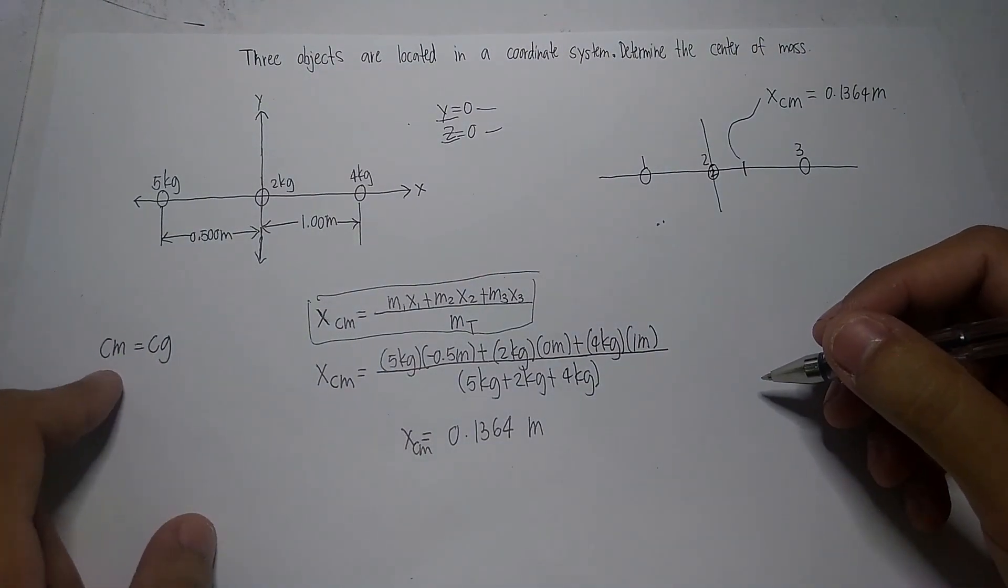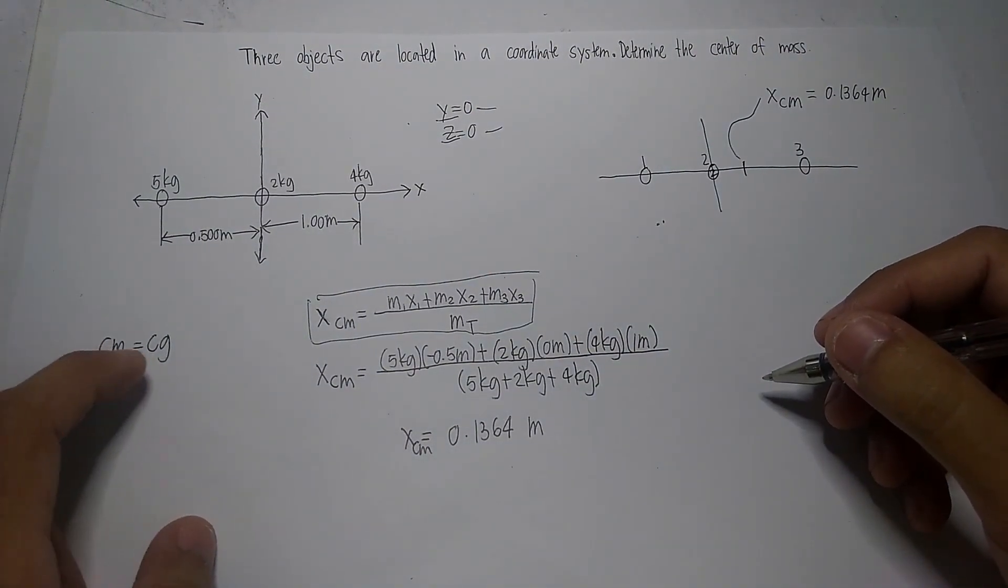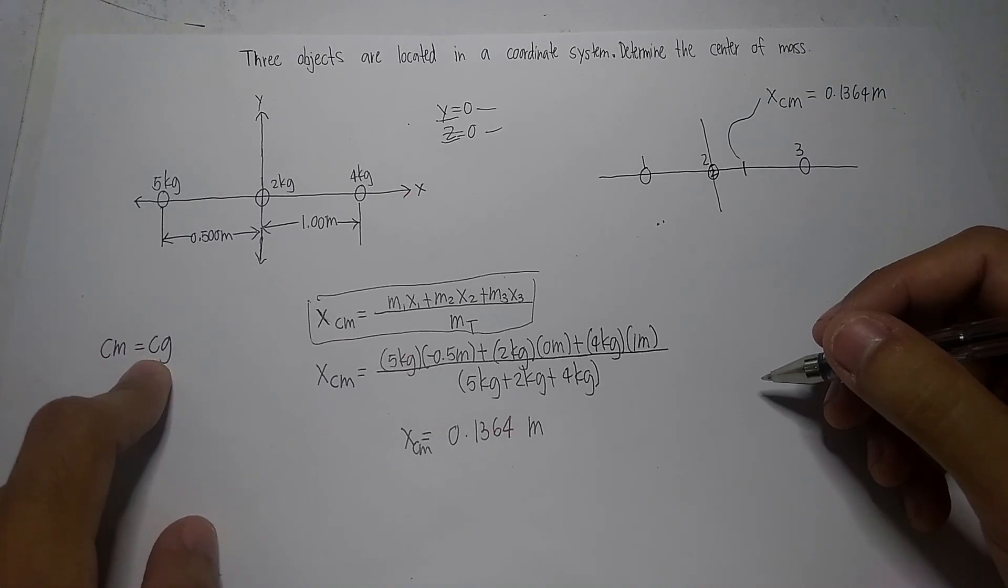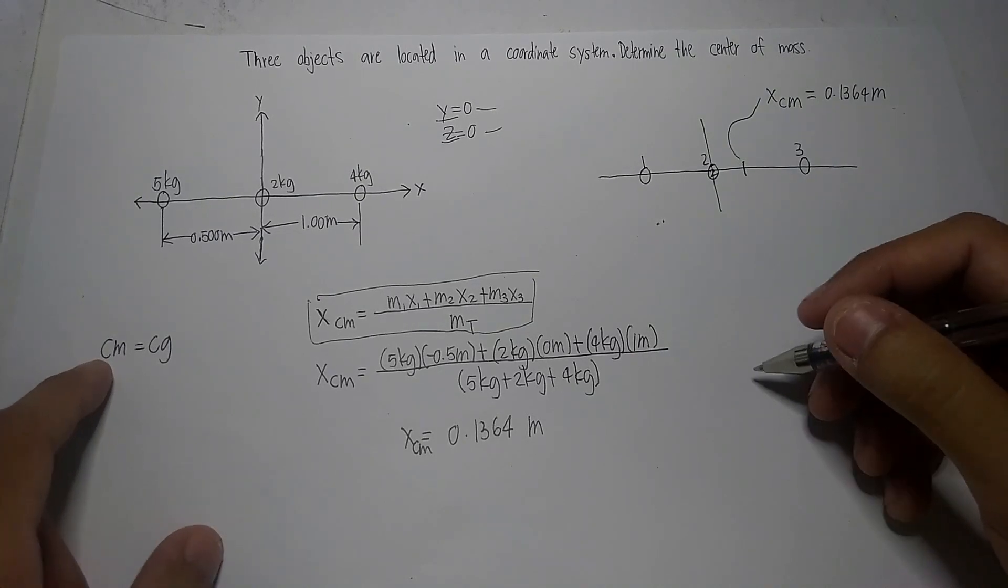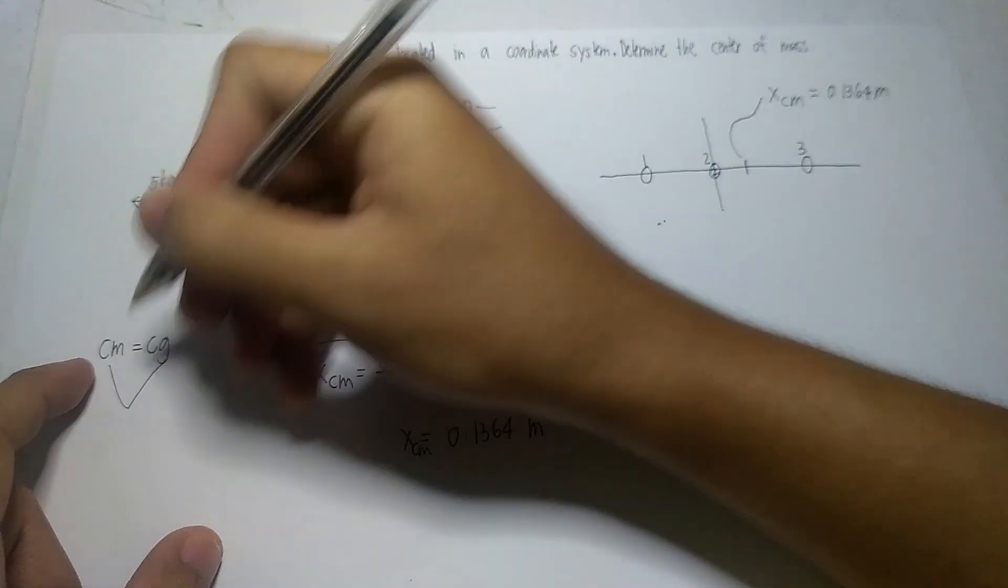Moreover, we should also note that there are some sources that use CG or center of gravity instead of center of mass. Either way, they are synonymous.